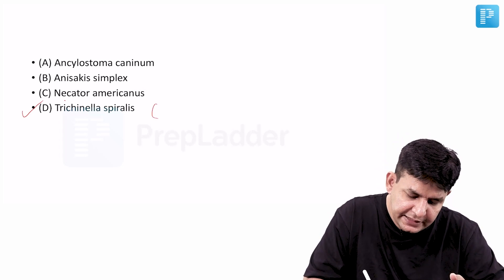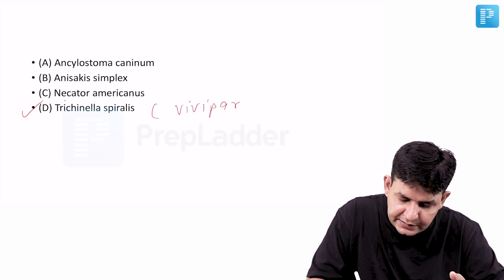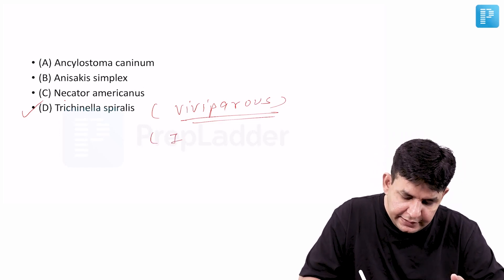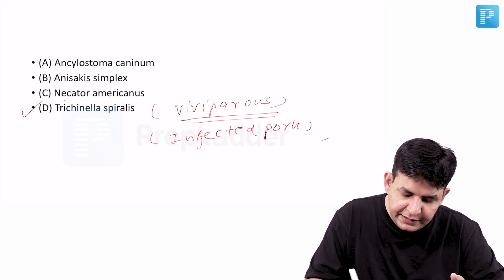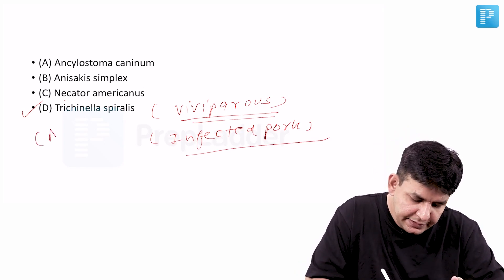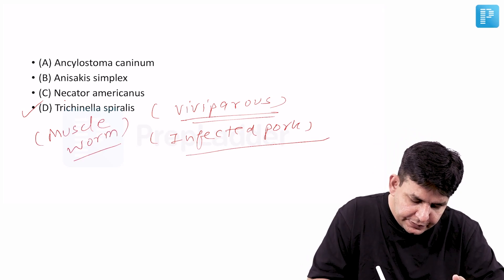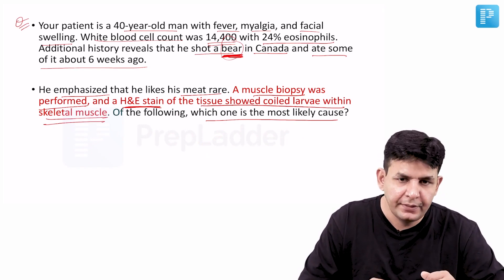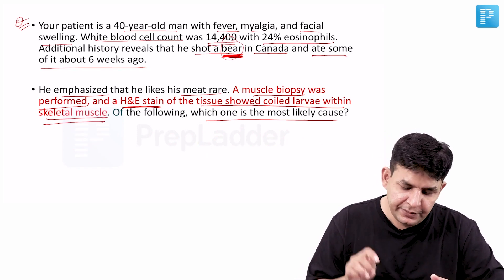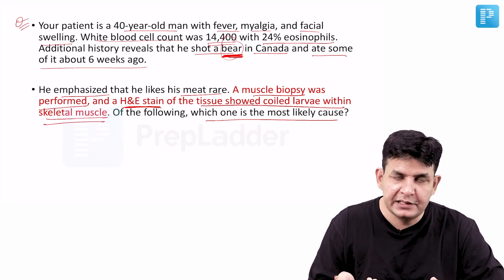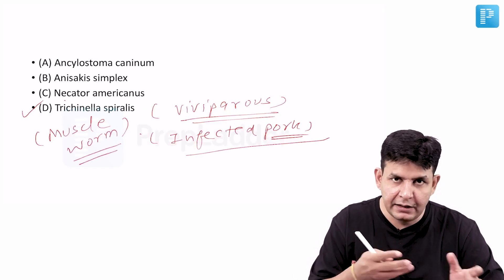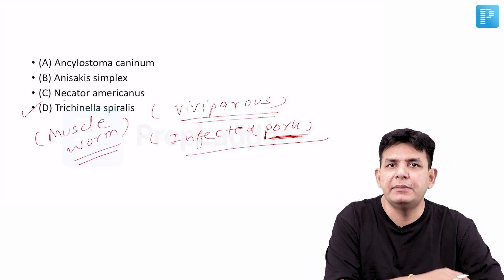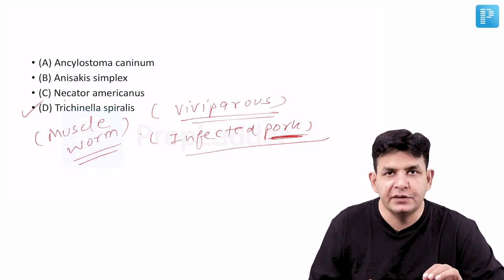The answer is Trichinella spiralis, which is a viviparous organism — there are no eggs, directly larvae. It is most commonly associated with eating infected pork, but in this question the patient ate bear meat from Canada, which was suffering from Trichinella spiralis infection. The larval form was present in the muscles of the bear. Trichinella spiralis is termed the muscle worm. Infected pork is the most common association, but bear meat can also transmit this infection.